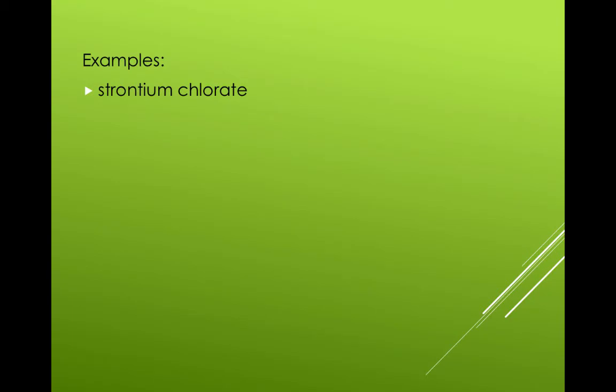Strontium chlorate. Sr plus 2 ion and ClO3 negative 1 ion. It crisscrosses to make Sr bracket ClO3 bracket 2. In this case, the bracket stays because it reminds us that we need two of the entire group of ClO3.